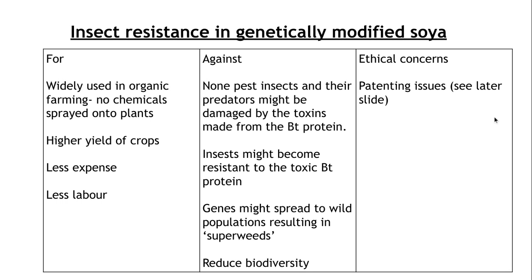However, against this: because the pest insects are dying off, there might be impacts on their predators, and also damage from the toxins made from the BT protein to predators that survive and eat those insects. The insects might actually become resistant to the BT protein, and genes might spread to wild populations resulting in a super weed that can't be killed off or eaten by insects. It also reduces biodiversity because you are killing off insect populations and growing one main plant — soya.